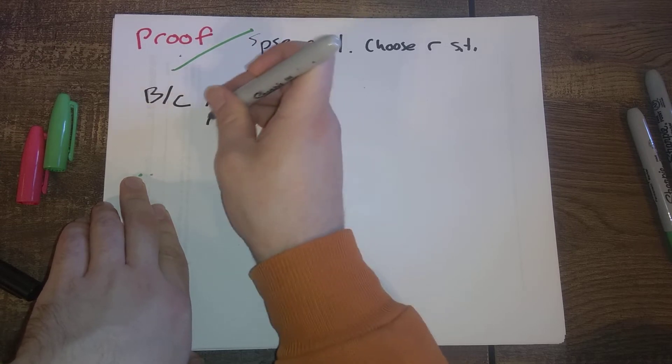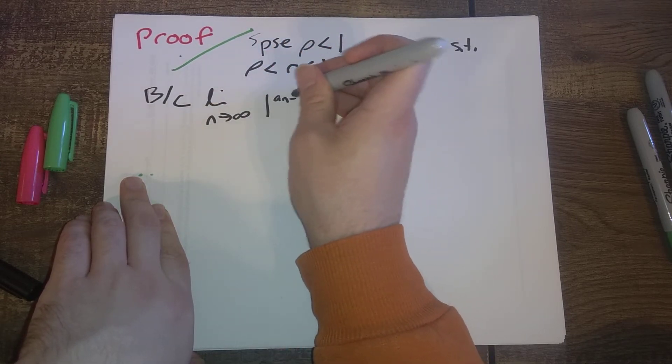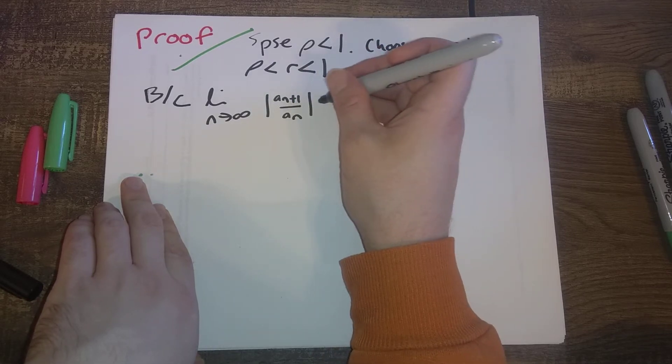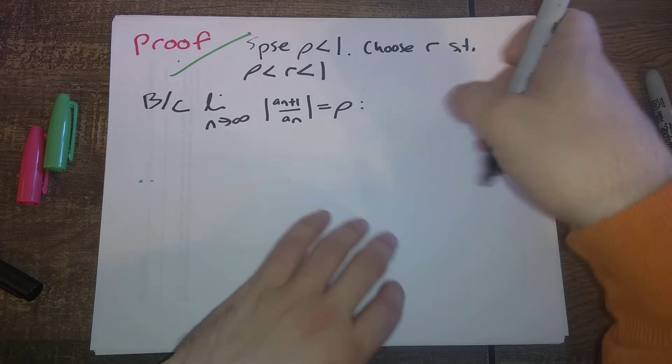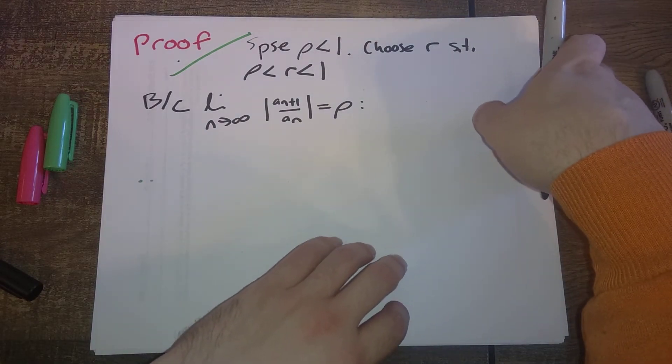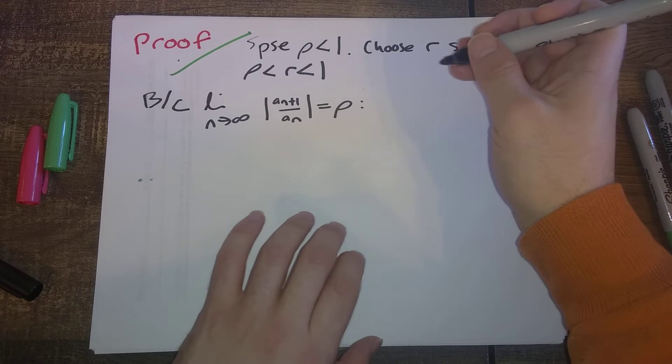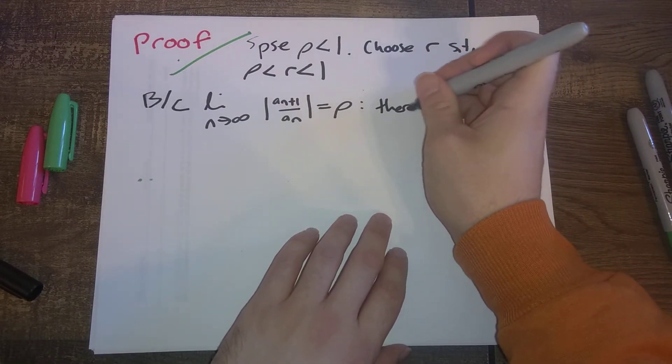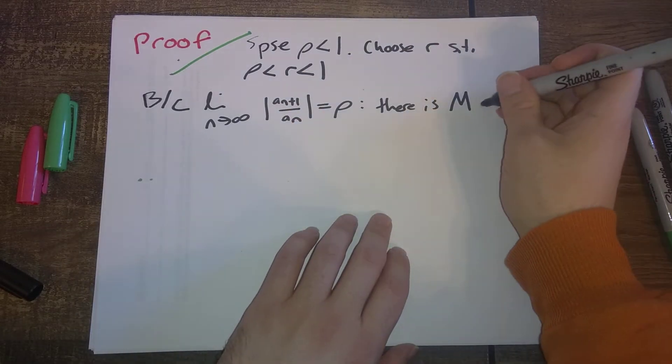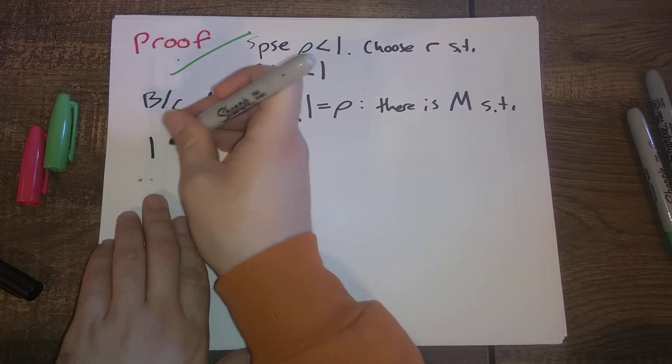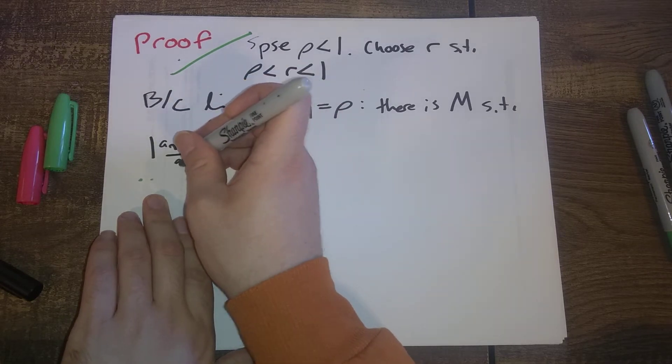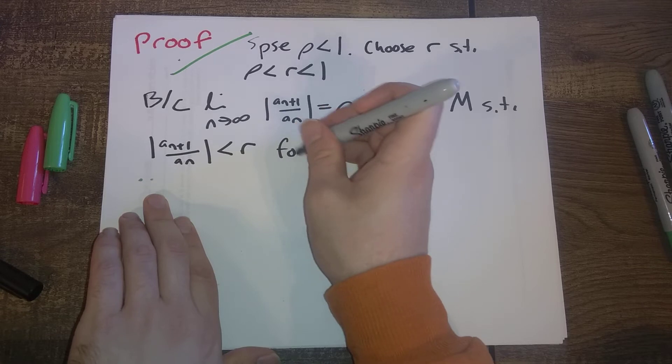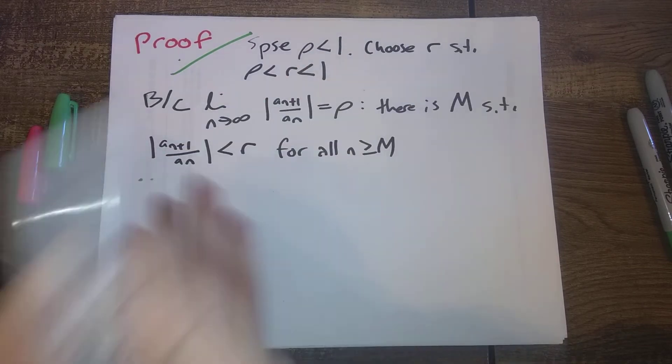If ρ is 0.999999, we can choose R to be 0.99999999. That's going to be between ρ and 1. So why do we do this? Because the limit as n goes to infinity of the ratio of the absolute value a_{n+1} to a_n is equal to ρ, by the formal definition of the limit back in Calc 1, we know there is some cutoff value big M such that the absolute value of a_{n+1} divided by a_n is less than R for all n strictly bigger than M.